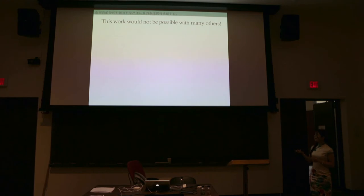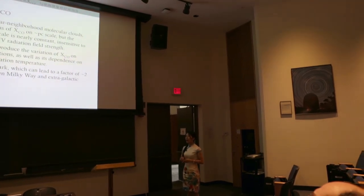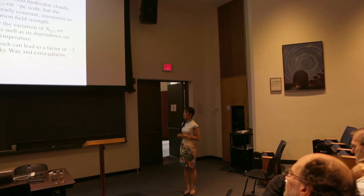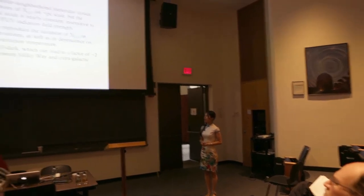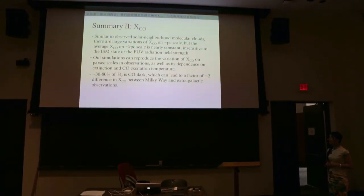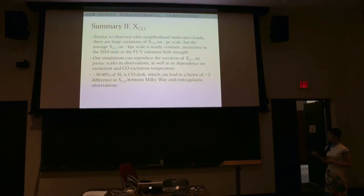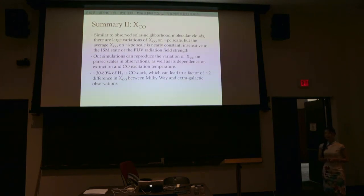Summary of part two on XCO: we found that XCO in the simulations is quite similar to observations. We can reproduce the average value of XCO as well as the variation on smaller scales. Our simulation also reproduces the dependence of XCO on excitation temperature and extinction, matching trends observed in the data. About 30 to 80 percent of H2 is CO-dark, which can lead to about a factor of two difference in XCO between Milky Way and extragalactic observations.